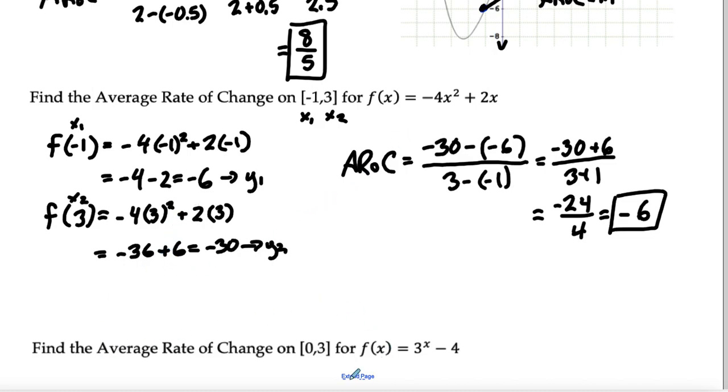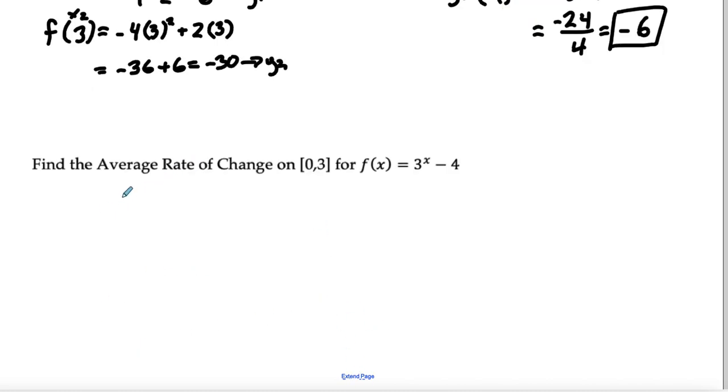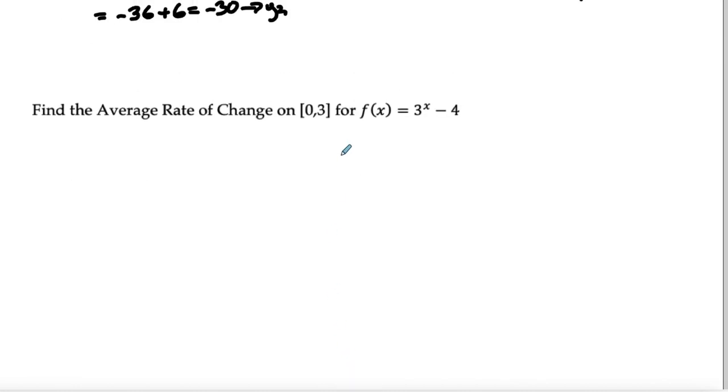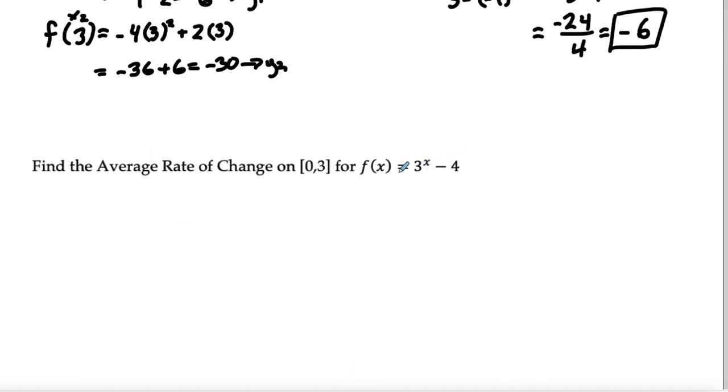Let's do the last one here. We're going to have one last one, and we're going to use an exponential function. So we have 3 to the x minus 4. We got our x1 and x2 right here.